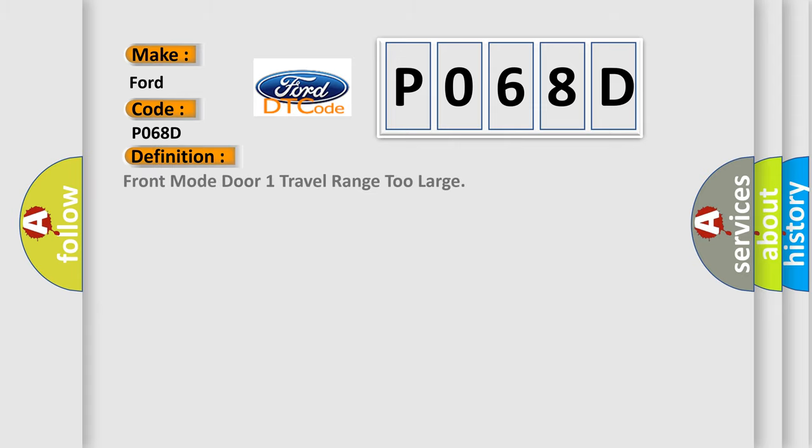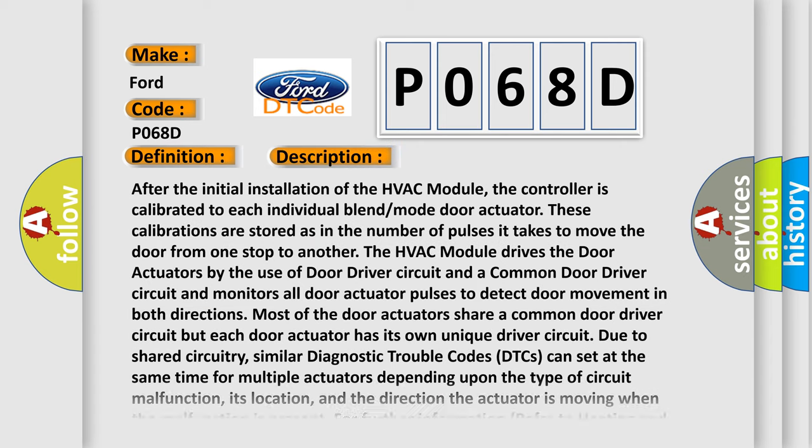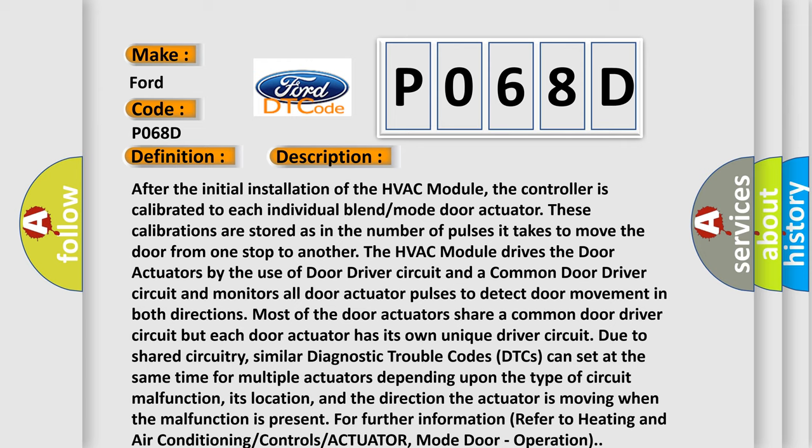The basic definition is: Front mode door one travel range too large. After the initial installation of the HVAC module, the controller is calibrated to each individual blend mode door actuator. These calibrations are stored as the number of pulses it takes to move the door from one stop to another. The HVAC module drives the door actuators using a door driver circuit and a common door driver circuit, and monitors all door actuator pulses to detect door movement in both directions. Most door actuators share a common driver circuit, but each has its own unique driver circuit. Similar DTCs can set simultaneously for multiple actuators depending on the type of circuit malfunction, its location, and the direction the actuator is moving. For further information, refer to heating and air conditioning controls actuator, mode door operation.